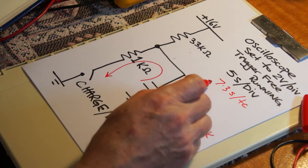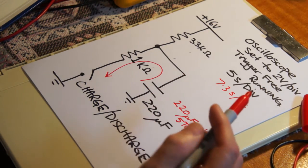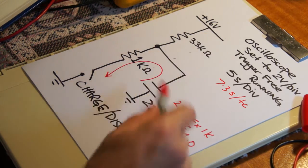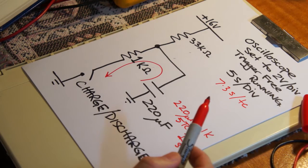So 5 times 7, we're looking at like 30 seconds, more than 30 seconds to charge this capacitor up by the 33k ohm resistor.